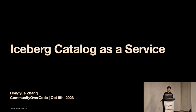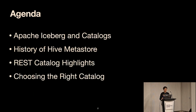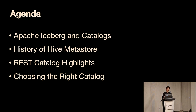I also want to acknowledge that I have colleagues Raj and Hyjos who were originally part of this talk but couldn't make it due to visa issues. Today I plan to go through: Apache Iceberg and what catalog means in Iceberg, then a detour to Hive Metastore to understand its foundational role, then a new enhancement in the REST catalog, and finally a comparison of catalog options.